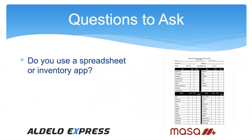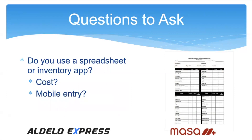Ask if they use a spreadsheet or an inventory app, and if so, what's the cost? Does the app give them the ability to do mobile entry? In our system, you can take an iPad and go count — there's no double entry, which saves time. You can take an iPad mini or an extra iPad and go count without printing out count sheets. Mobile entry is one of our advantages and it ties back to ease of use.